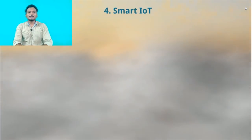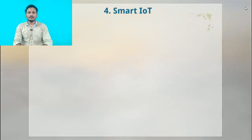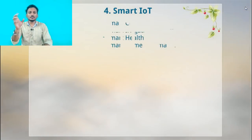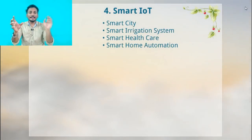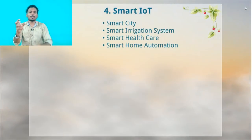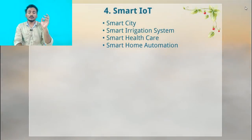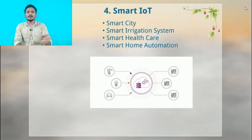Your fourth project idea on IoT is Smart IoT. What are the categories? For example, Smart City, Smart Irrigation System, Smart Health Care, and Smart Home Automation.